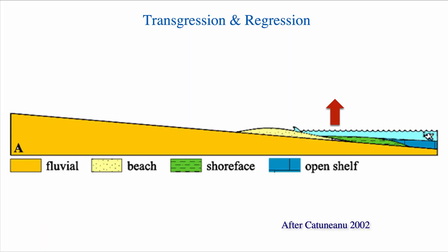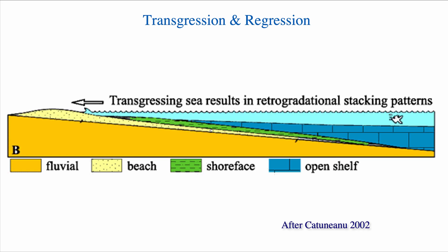Now let's imagine that we have for the moment a base level rise or a sea level rise. What happens if sea level is rising? Well if sea level rises, the facies will migrate towards the continent. So here we have a beach facies, shore face, open shelf. When sea level rises, all of these facies migrate towards the continent. And I've already introduced that term - this is known as a transgression. So we have a transgressive sea that results in what is known as a retrogradational stacking pattern.